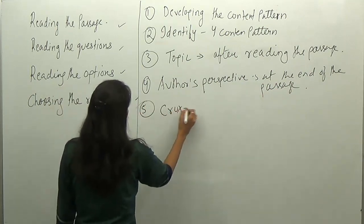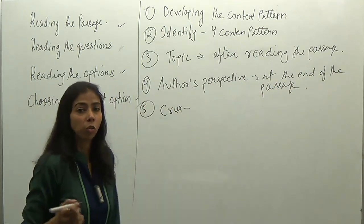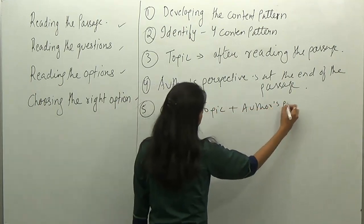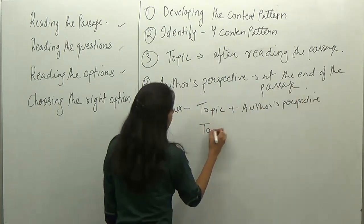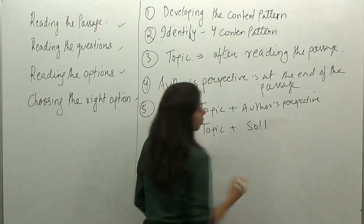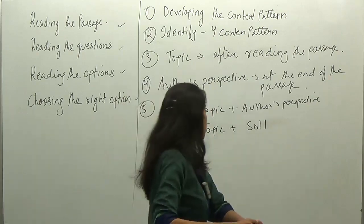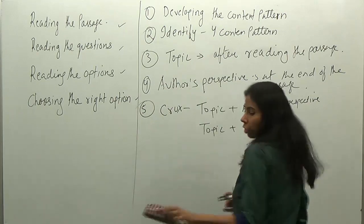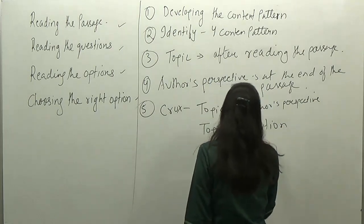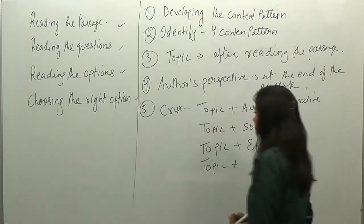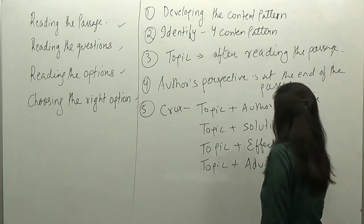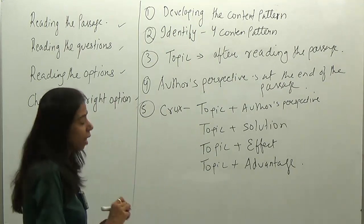Fifth, the crux. We know that the crux is hidden — it is implicit in the passage. To identify the crux, it is topic plus author's perspective, or it could be topic plus solution, topic plus solution option, topic plus effect, or topic plus advantage. This is how you find out the crux of the passage.